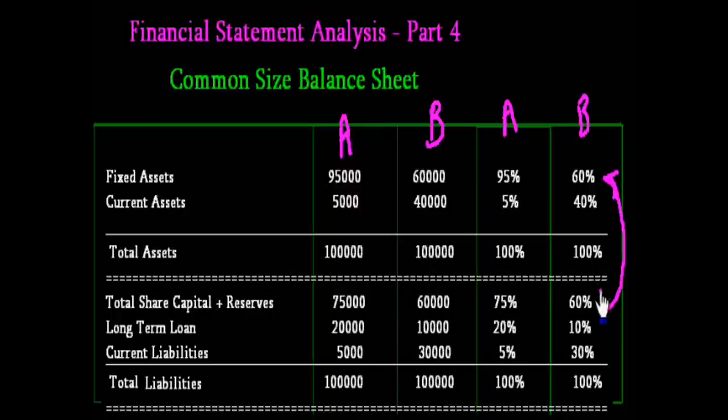This is the main point of analysis between the two companies. Second, Company A's current assets are 5% and its current liabilities are 5%. It means there is nil working capital, which is not good because current assets must be more than current liabilities.